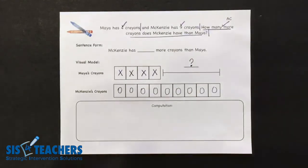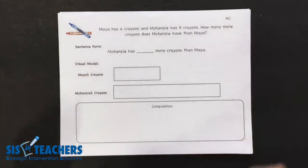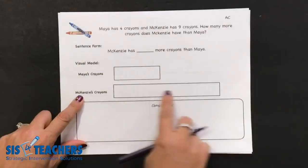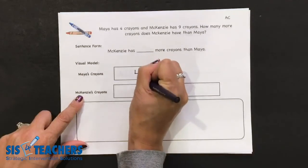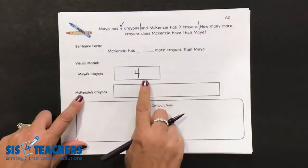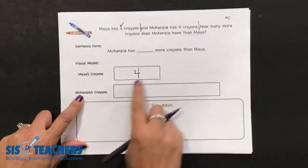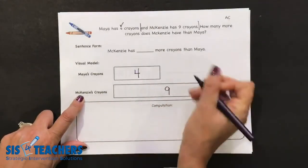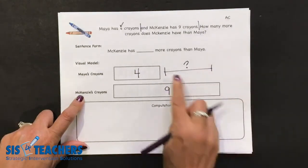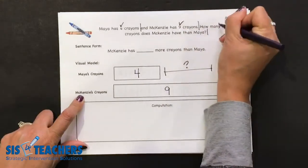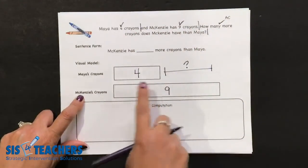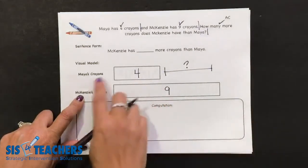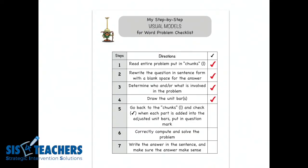If I brought this in as a non-proportional bar, I'm going to represent that Maya has four crayons without drawing in the individual lines, and we know that Mackenzie's bar is representing nine. The question mark is in that blank space, looking to see how many more Mackenzie has than Maya — same process, just shown in the non-proportional model. Once kids get to second grade they have to build these all on their own as problems become more complex, so we're trying to create a really good foundation.